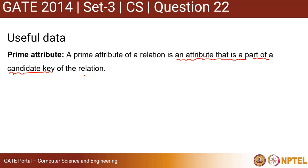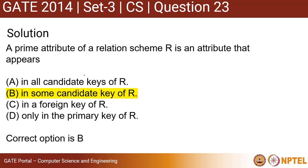And a primary key is nothing but a candidate key itself. So if you look at option A — in all candidate keys of R — that is not correct, because the attribute can be part of any candidate key, not necessarily all of them.